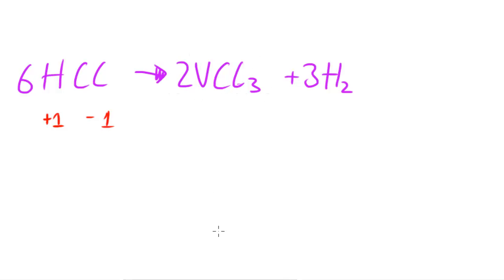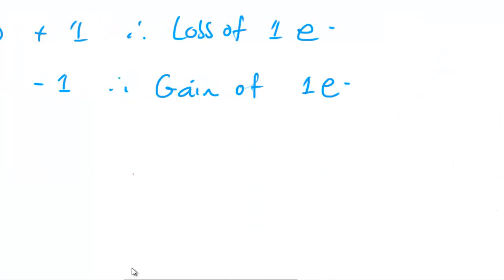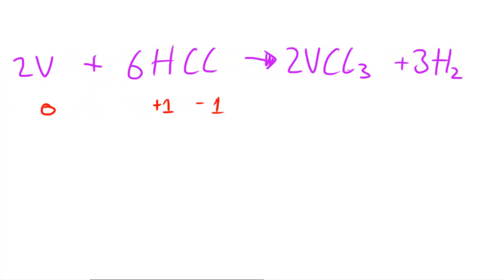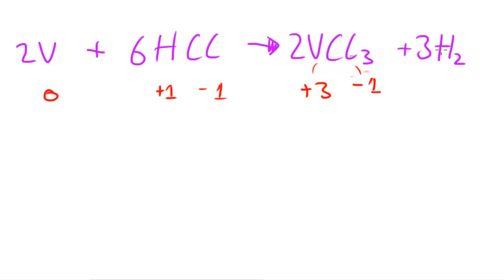Looking at the products, vanadium is much less electronegative than chlorine, so chlorine is going to want those electrons. Because of that, the oxidation number of vanadium is probably going to increase. Since we have three chlorine atoms bonded to one vanadium, vanadium will have an oxidation number of plus three, and each chlorine atom will have an oxidation number of minus one. This also produces three molecules of hydrogen gas, and since hydrogen is combined with its own element, it has an oxidation number of zero.